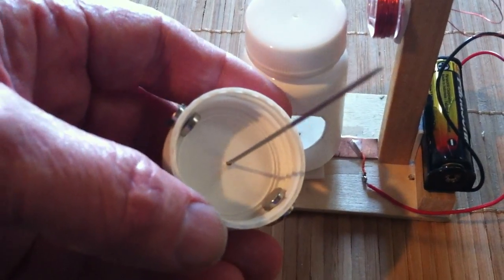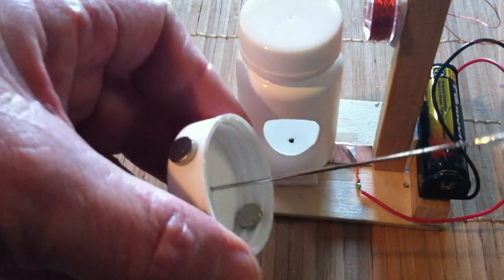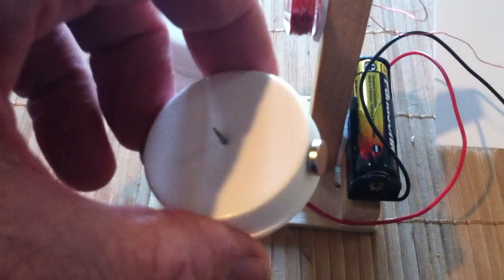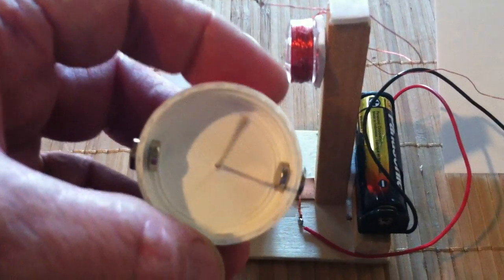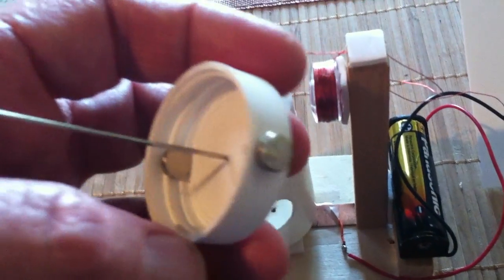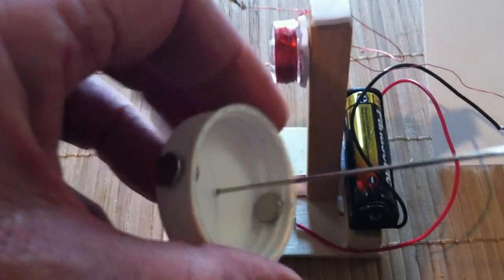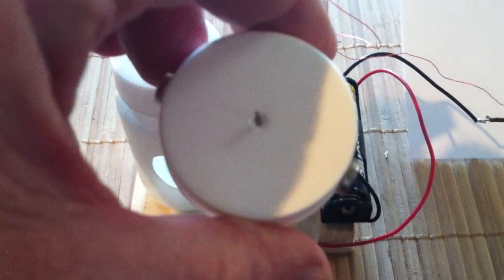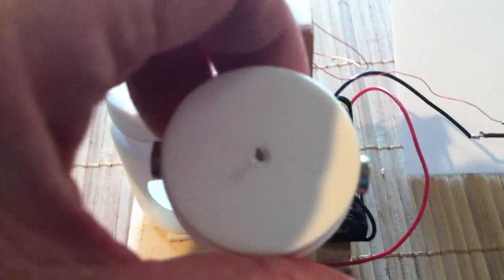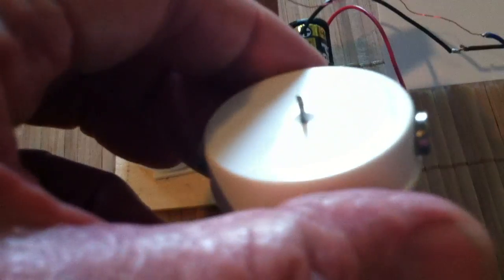This is the darning needle that goes through that jar lid, and then the magnets are just holding each other on with the attraction. There's four magnets, and you'll have to hunt around to find these neodymium magnets, but they're just held on with the attraction. If you don't speed the motor up they don't fly off.